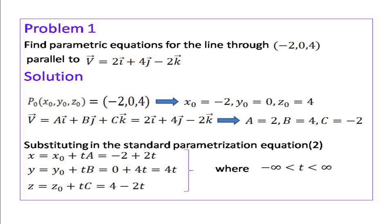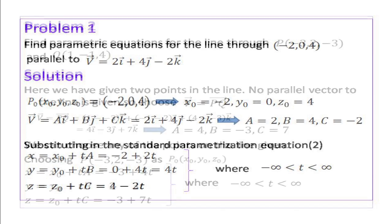Substituting the values of x0, y0, z0, a, b, and c in the standard parametric equations, we have: x = -2 + 2t, y = 0 + 4t, z = 4 - 2t, where negative infinity less than t less than infinity.